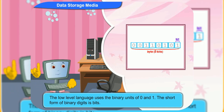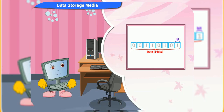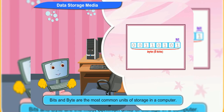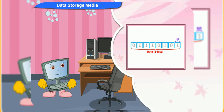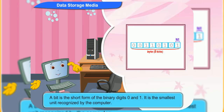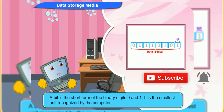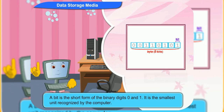The short form of binary digits is bits. Bits and bytes are the most common units of storage in a computer. A bit is actually the short form of the binary digits 0 and 1. It is the smallest unit recognized by the computer.